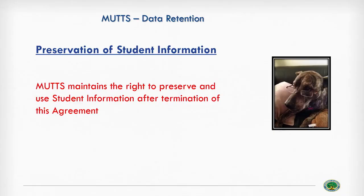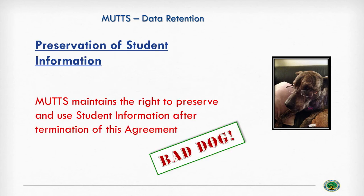Data retention — preservation of student information. MUTTS maintains the right to preserve and use student information after termination of this agreement. That's a very bad dog provision, because it's the school's data, it's the student's data. Why should the vendor have the right to hold on to identifiable information when they're no longer serving as a school official?